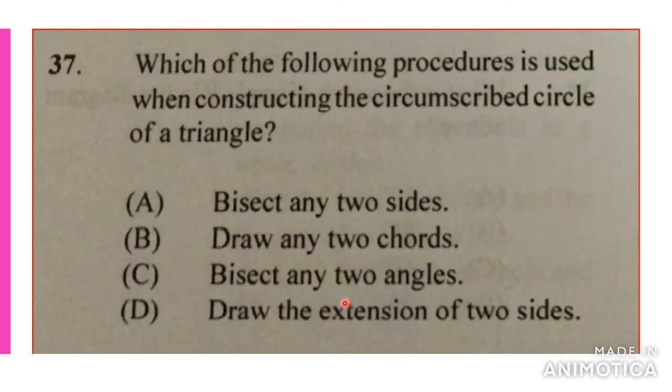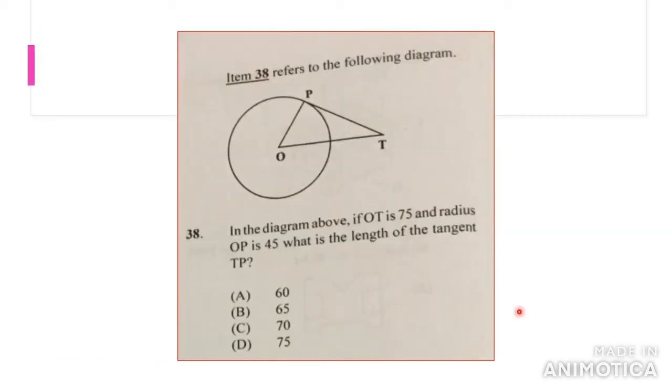Which of the following procedures is used when constructing the circumscribed circle of a triangle? A circle going around a triangle. One of the first things that you have to do when constructing a circle around a triangle is to find the center of the circle. To find the center of the circle, you have to bisect two chords or two sides of the drawing itself. The answer would be draw any two chords.